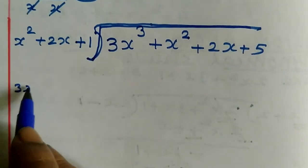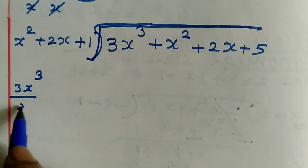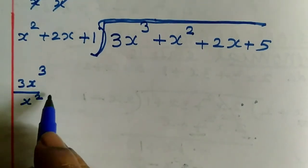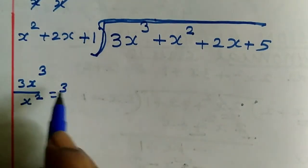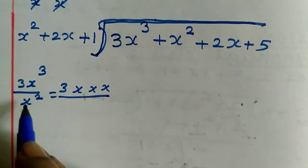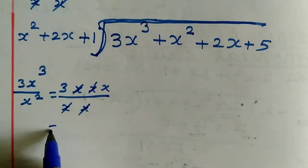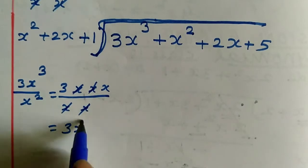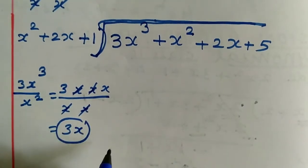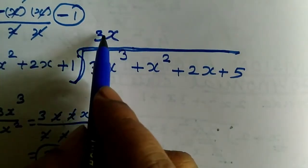The first term is 3x³. In g(x), the first term is x². To divide 3x³ by x², we cancel the x terms and get 3x. Now 3x is the quotient's first term.